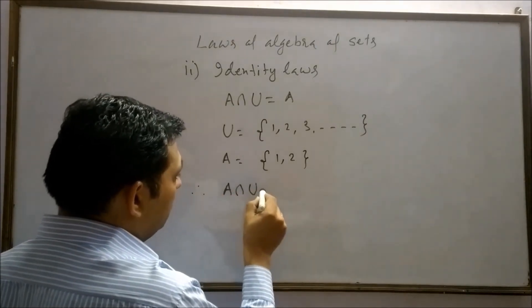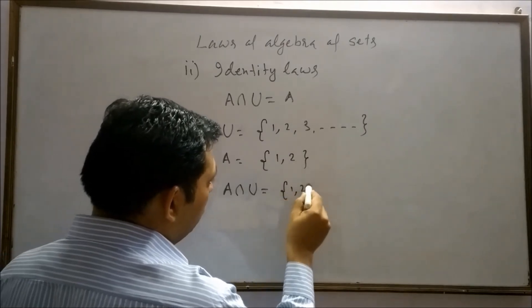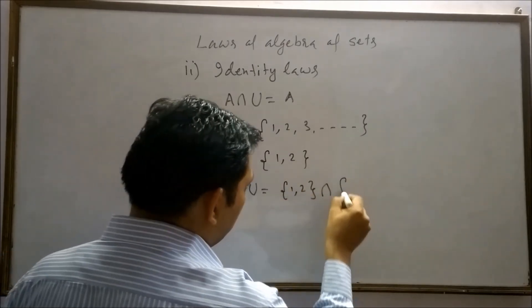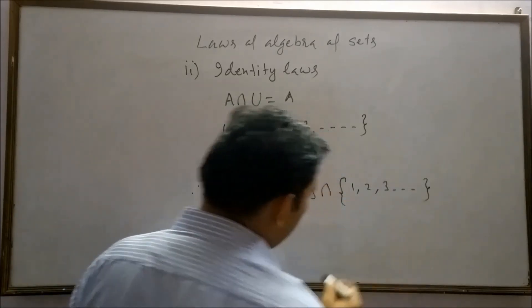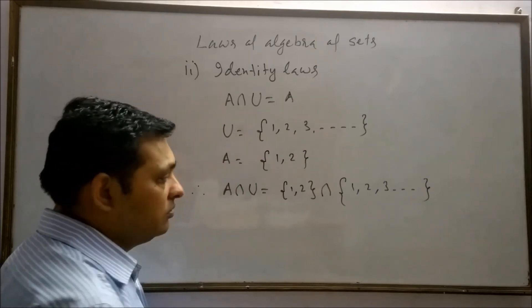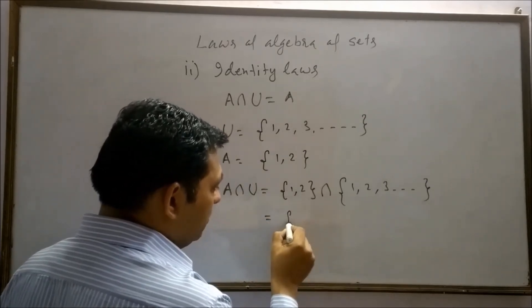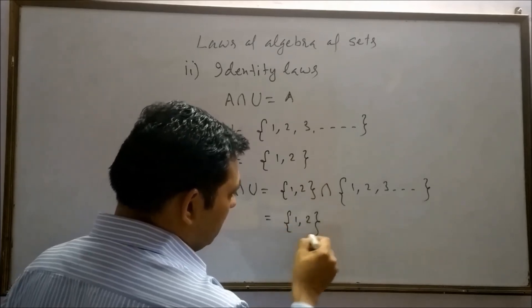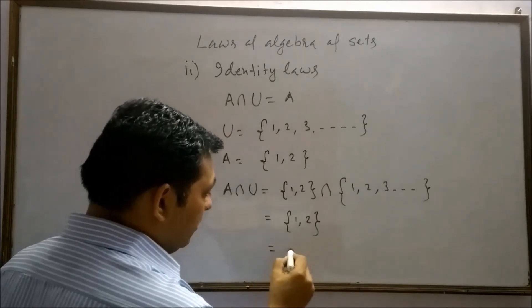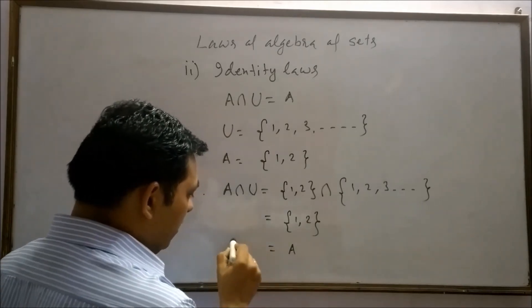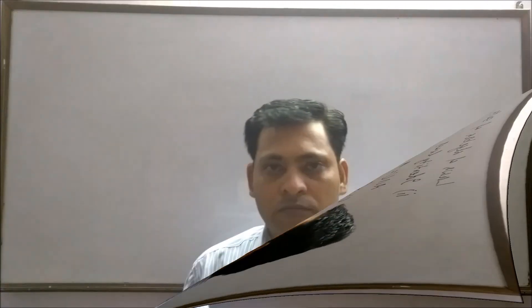A intersection universal set means {1, 2} intersection the set of natural numbers. Intersection means to find common elements. We will get a set containing 2 elements, 1 and 2, that is A. Therefore, A intersection universal set gives us A.